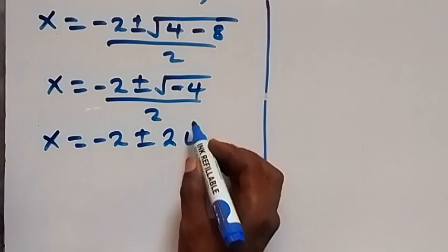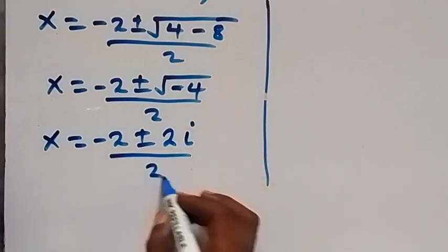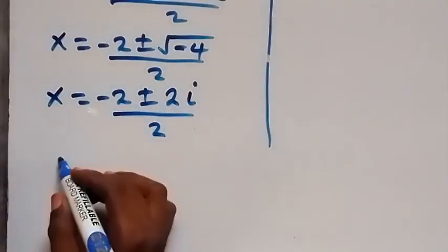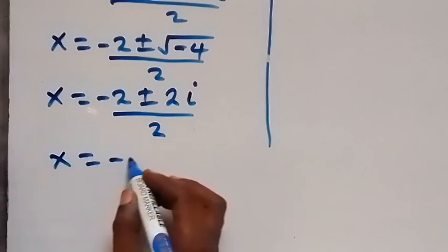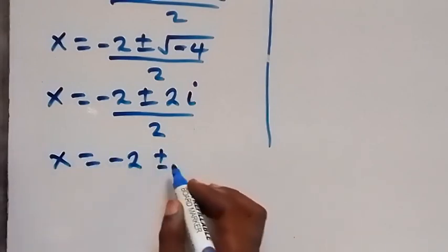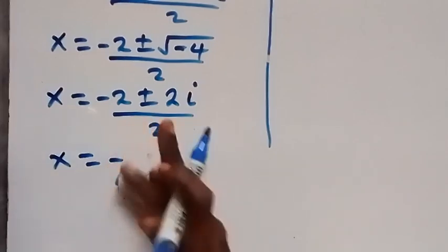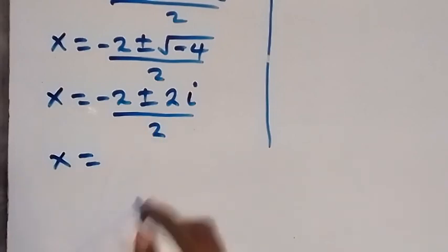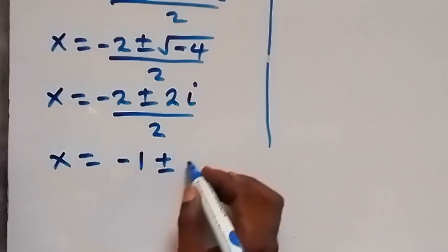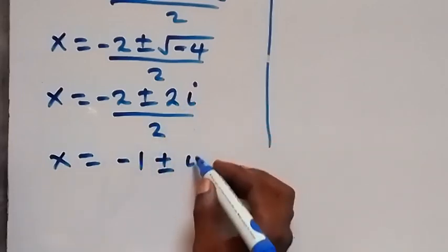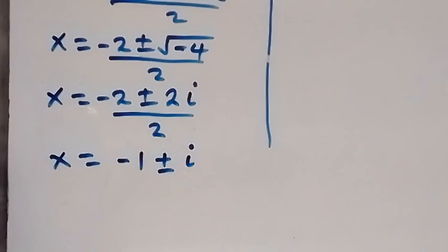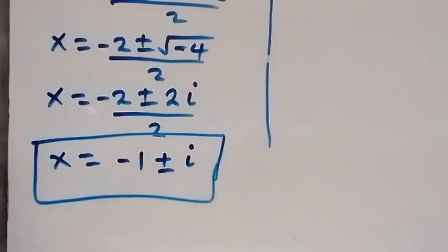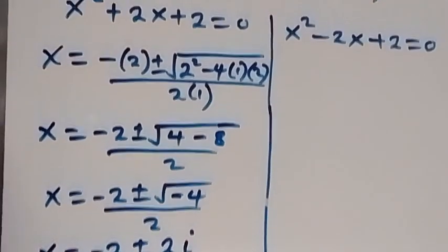Square root of 4 is 2 and square root of minus 1 is i, all over 2. The 2 cancels, so this gives us x = −2 ± 2i over 2, which simplifies to x = −1 ± i. So from the first equation we get x = −1 + i or x = −1 − i.